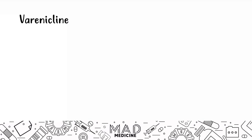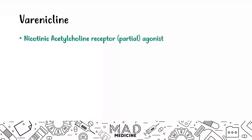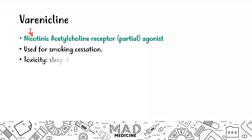The next drug is varenicline. Varenicline acts like nicotine — it is a partial agonist of the nicotinic acetylcholine receptors and is primarily used for smoking cessation. Because it agonizes nicotinic acetylcholine receptors, its toxic side effects are similar to nicotine or smoking: sleep disturbances and depressed mood.